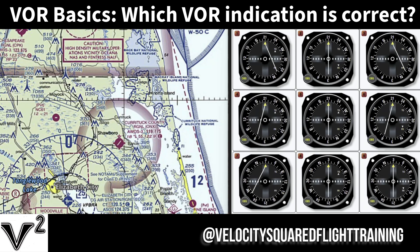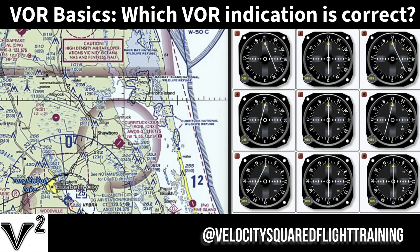For this FAA test question, we're going to be tackling the question that begins with the Elizabeth City VOR, which is right here. This is the Elizabeth City Airport. There's a VOR co-located with it, and you can tell because the VOR has a small dot right there on the bottom. So you know that the VOR is right at the airport.